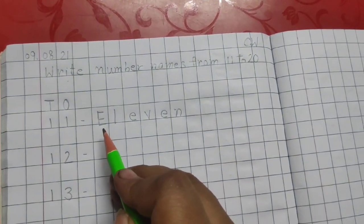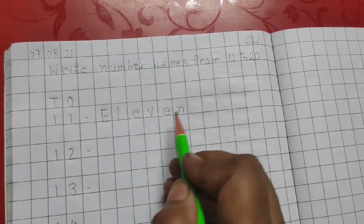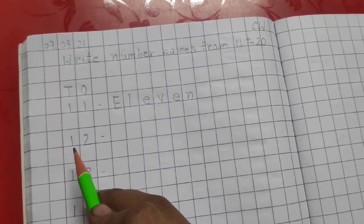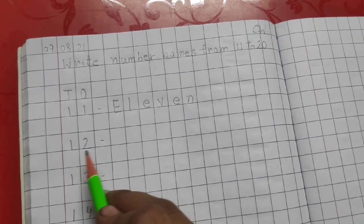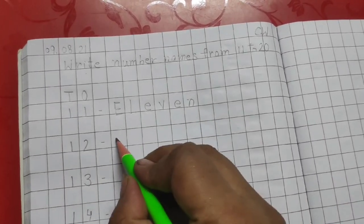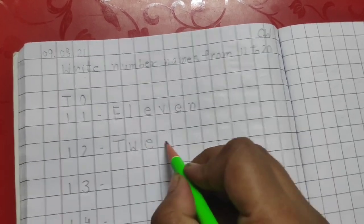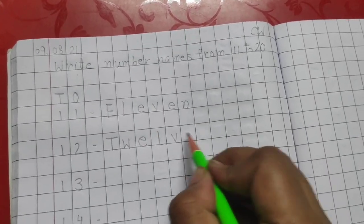The first letter you have to write with capitals and the rest you have to write in small letters. After that, the next number is 12. The number name for 12 is T-W-E-L-V-E.